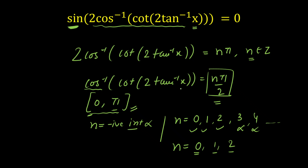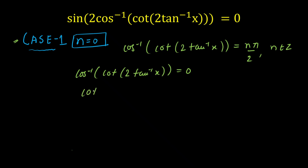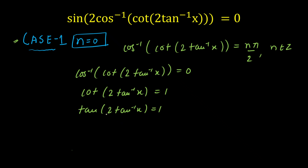We have three values of n — 0, 1, and 2 — each giving different values of x. Starting with n=0: the equation becomes cos⁻¹(cot(2·tan⁻¹(x))) = 0. Taking cos on both sides gives cot(2·tan⁻¹(x)) = 1. Since cot(θ)=1 implies tan(θ)=1, we now write the general solution for tan(θ)=1.